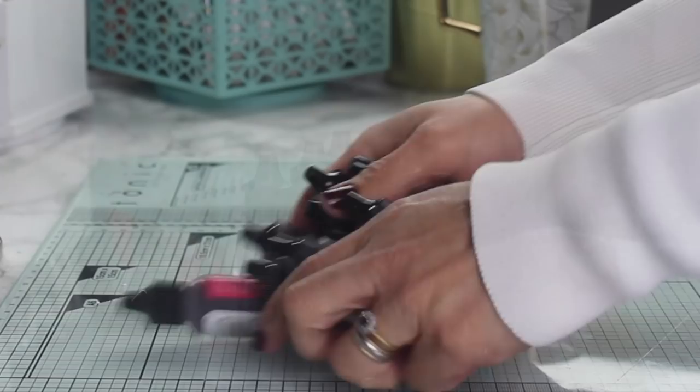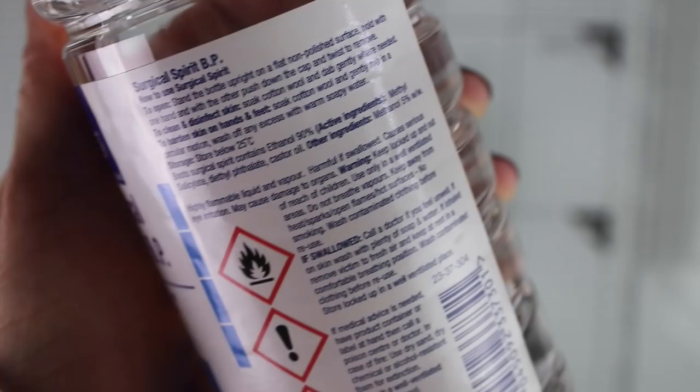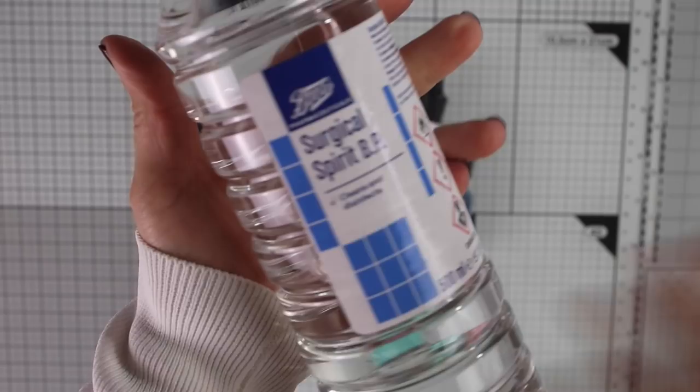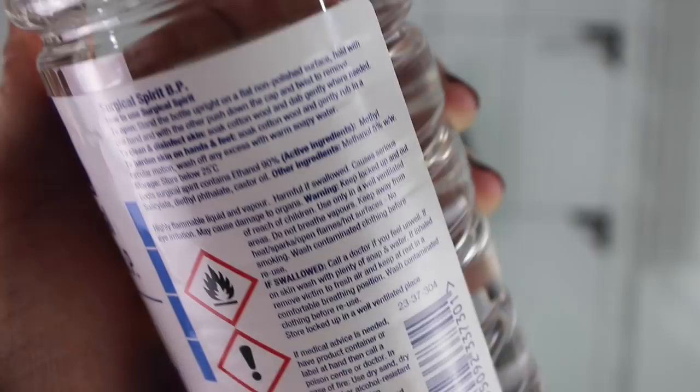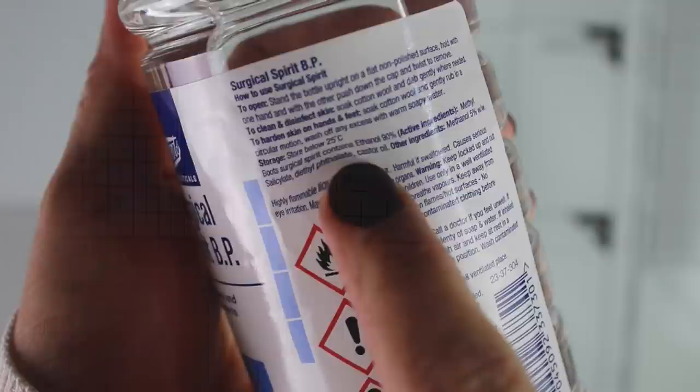To blend the ink I'm going to be using surgical spirit. I really like this stuff to use as a blending solution with alcohol inks. It doesn't have a strong smell and it's very affordable. So I made a bunch of background panels for my cards today.